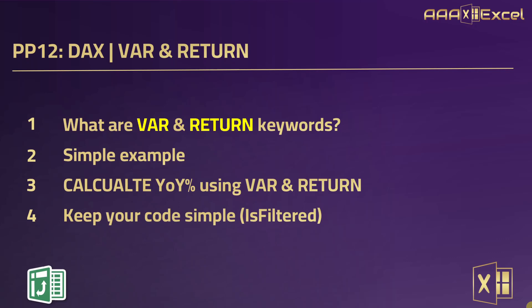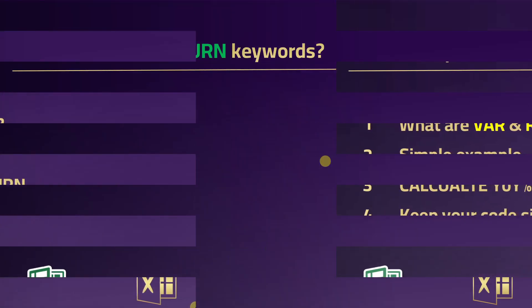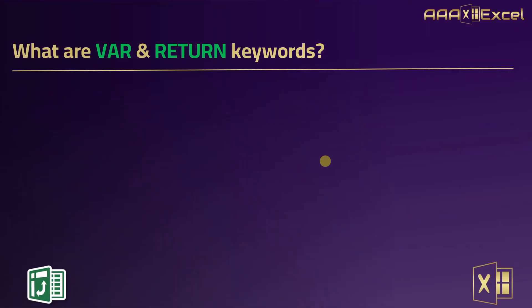We are going to try to hide the measure in the total row using the ISFILTERED function inside the same measure, and we'll see how using VAR and RETURN it is more simple and more readable. Let's start by shedding some light on VAR and RETURN keywords.